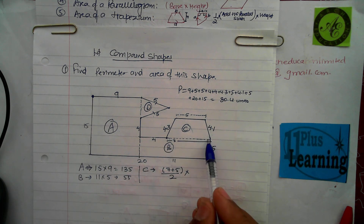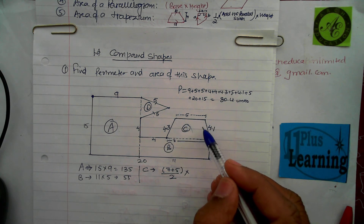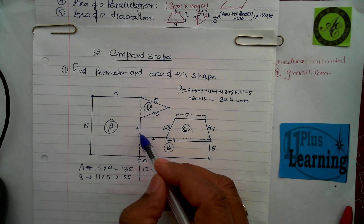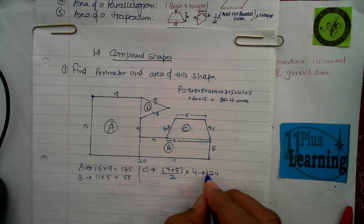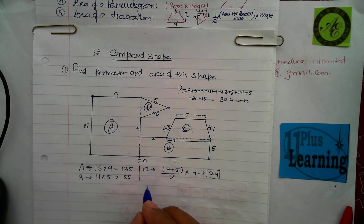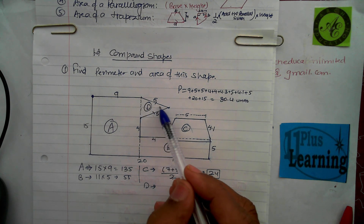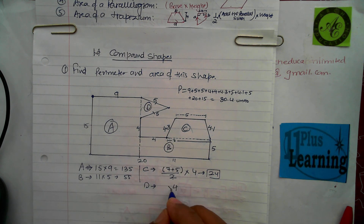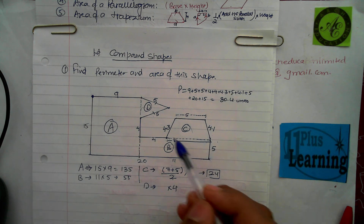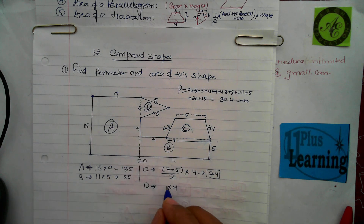For trapezium C, the parallel sides are 7 and 5, and the height is 4. Area = (7 + 5) ÷ 2 × 4 = 6 × 4 = 24. For triangle D, the height is 4 and the base is 6 (15 minus 9 = 6). Area = (6 × 4) ÷ 2 = 12.